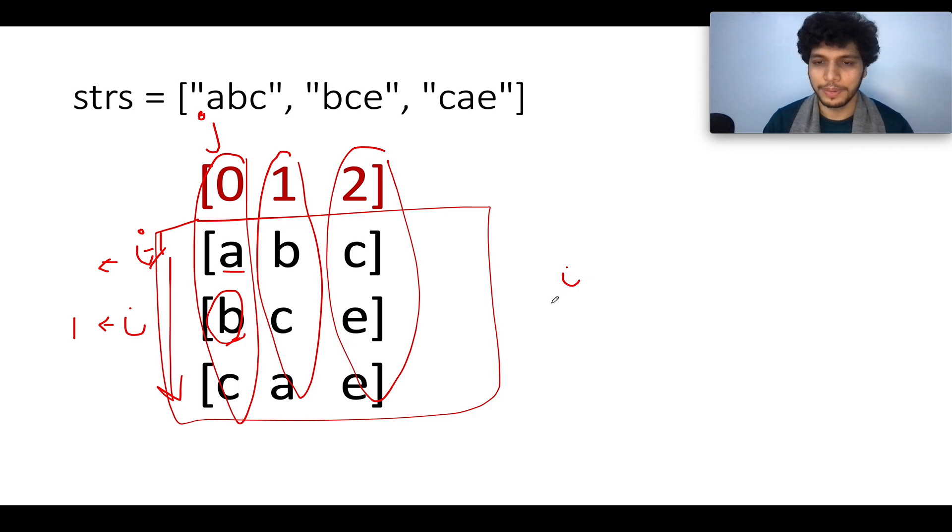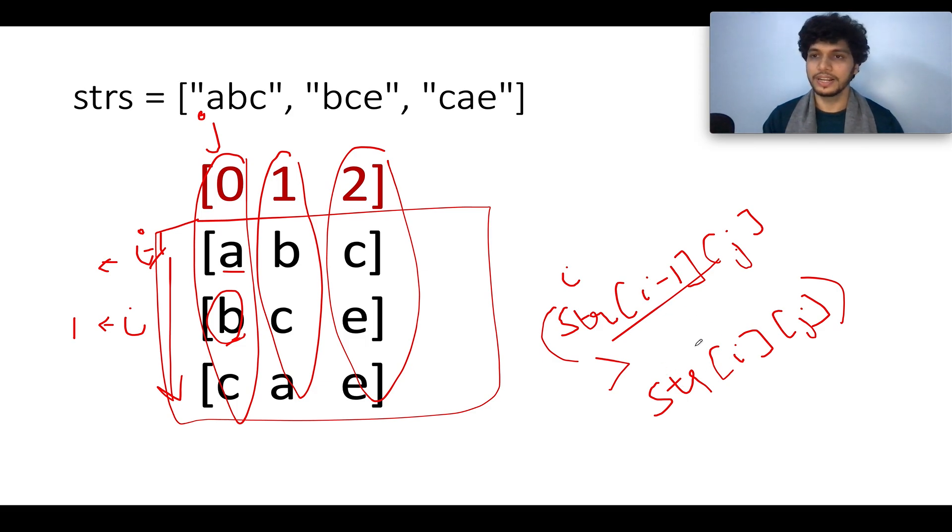We are basically comparing str of i minus one at the jth index with str of i comma jth index. If the previous value happens to be greater than the current value, that means it is lexographically unsorted in nature.